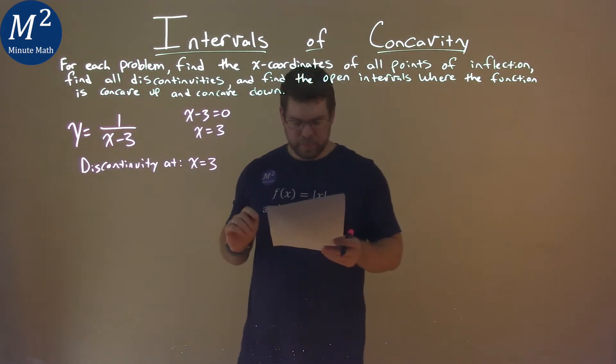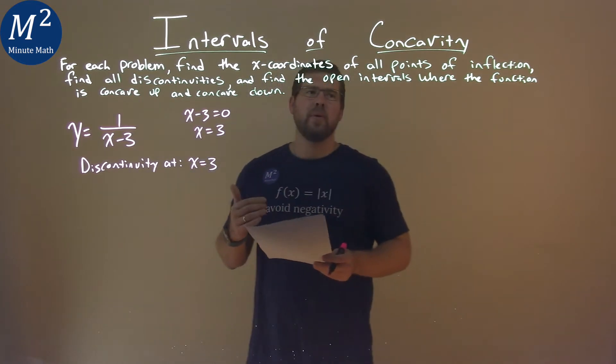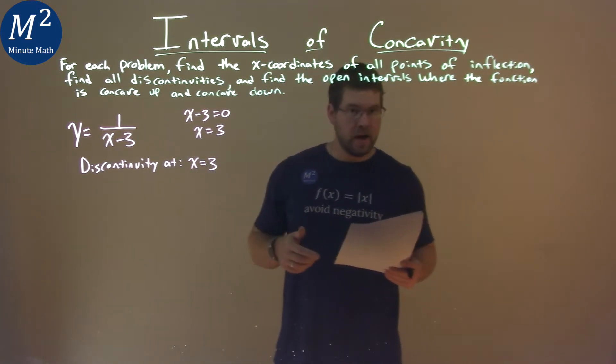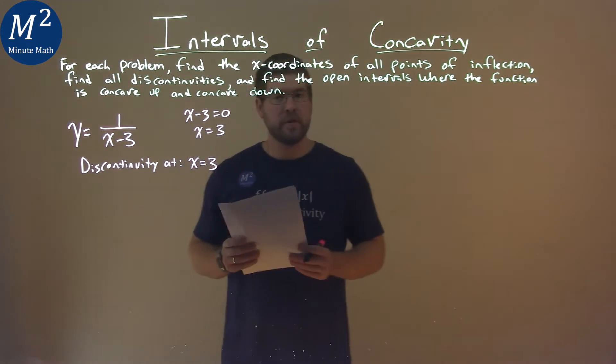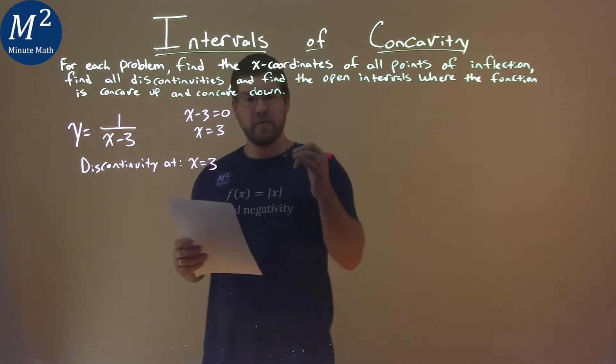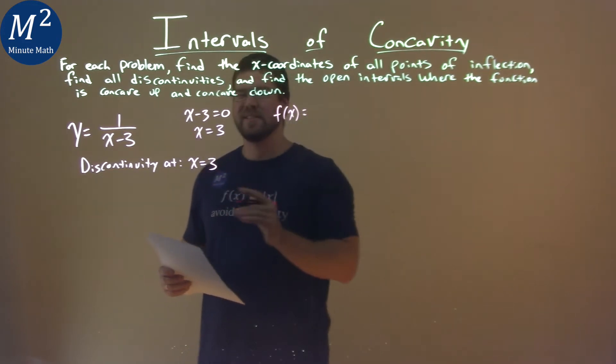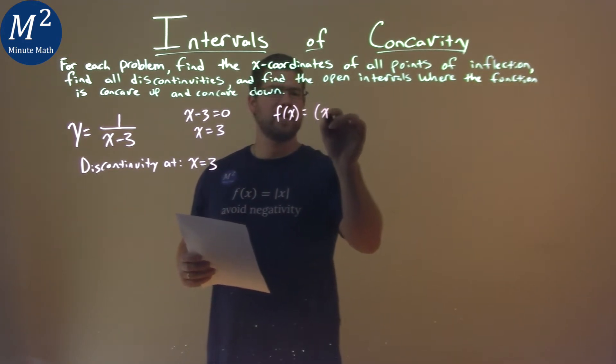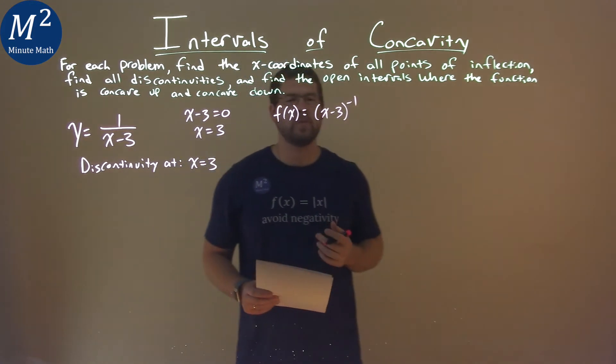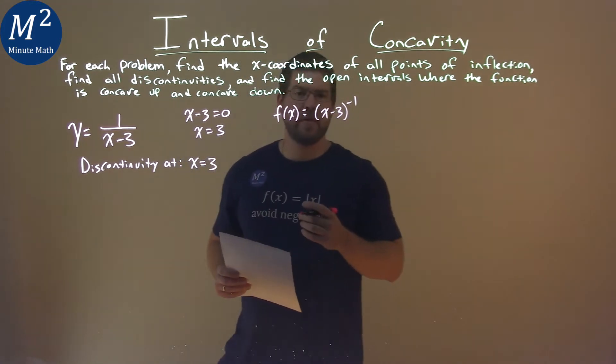Now, to find our points of inflection and where we're concave up and concave down, we need to find the second derivative. And to do that, we need to find the first derivative. I actually like to write my function, when I have a rational function just like this, as x minus 3 to the negative 1 power. I find it easier to find the derivative.